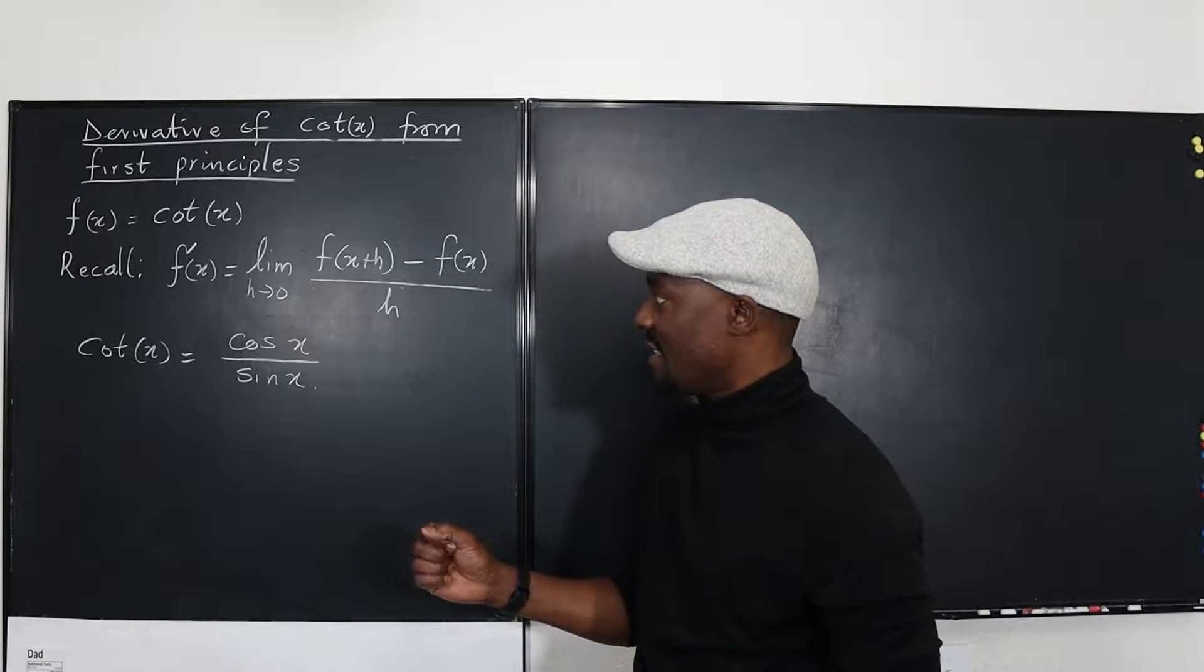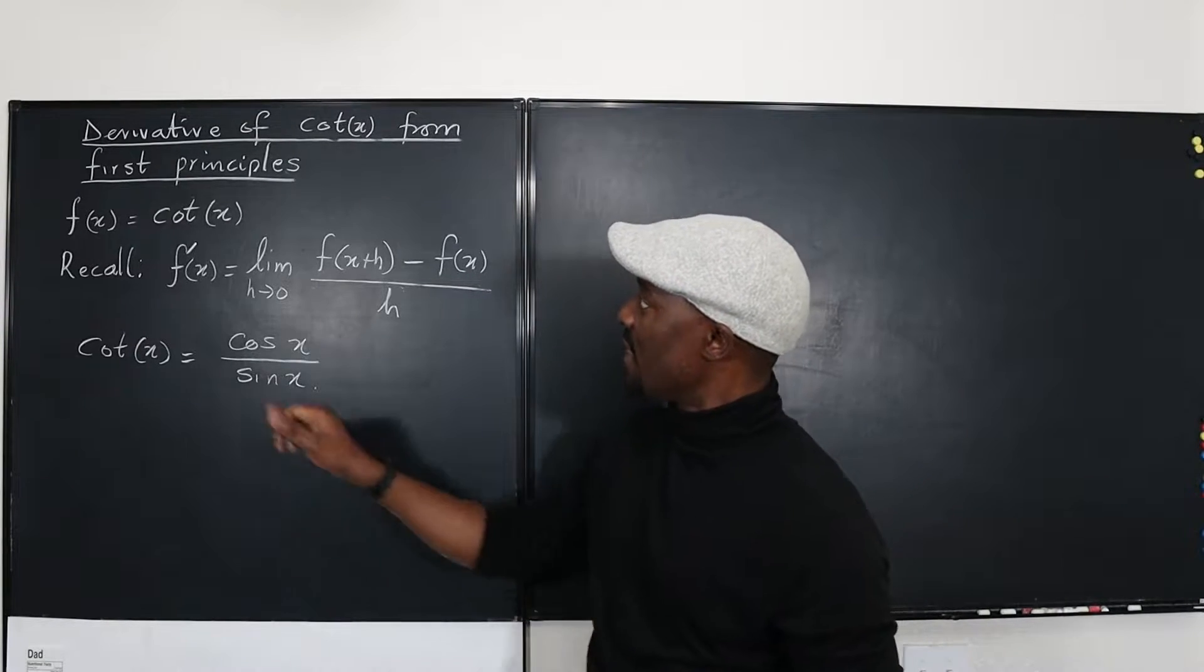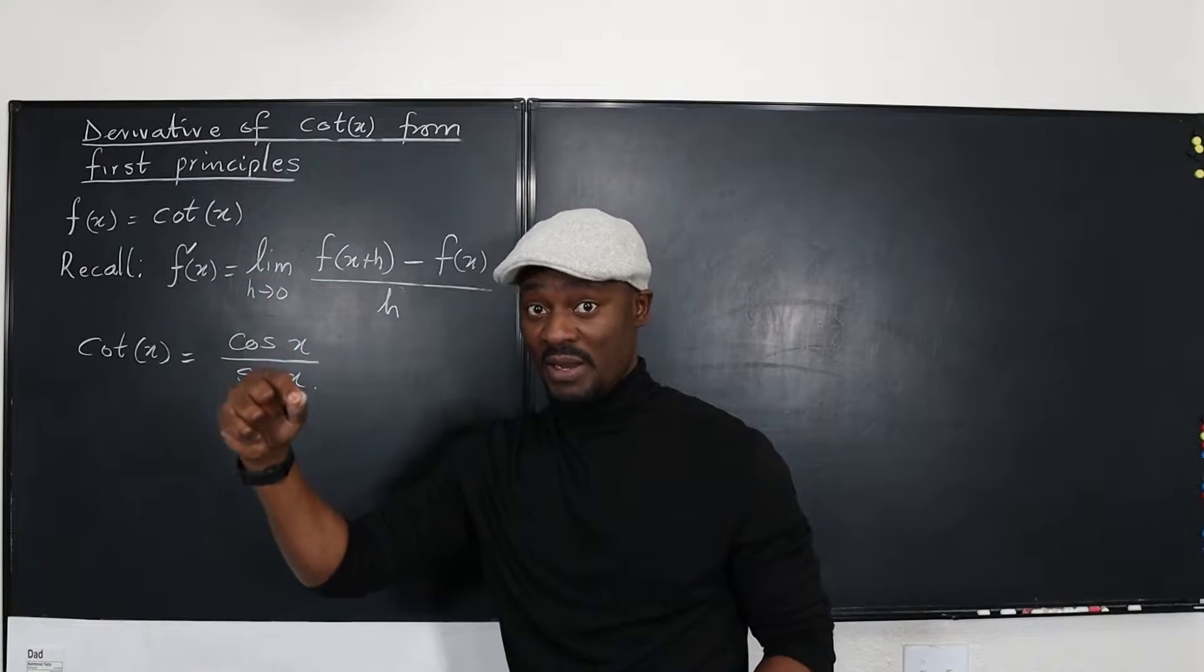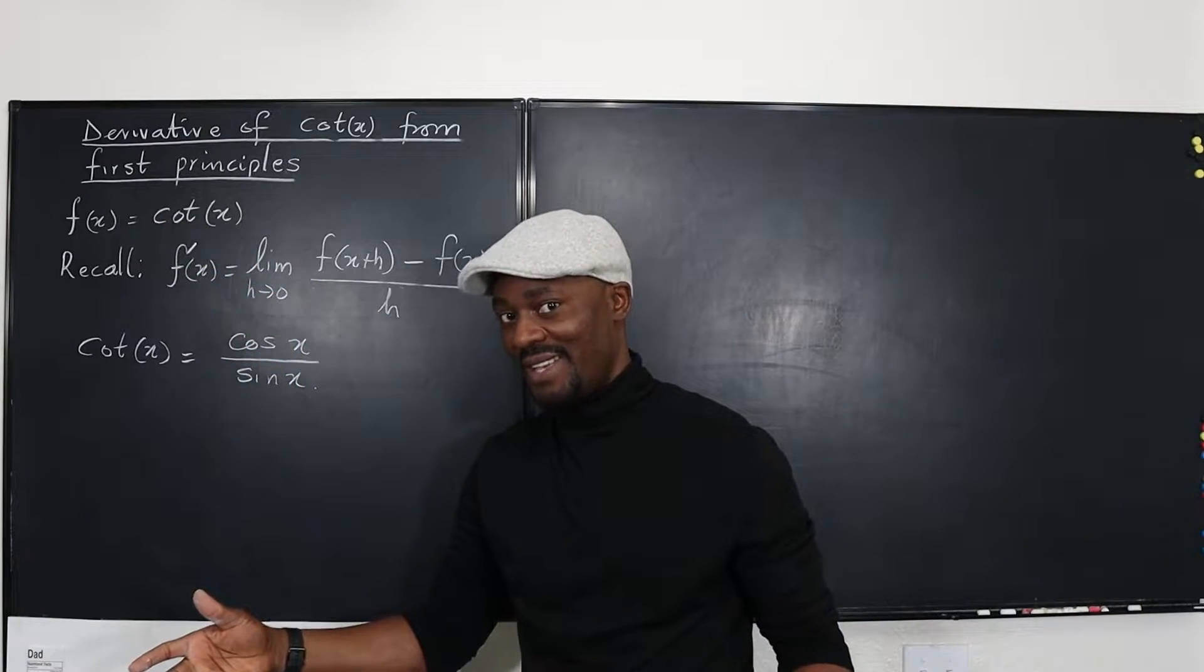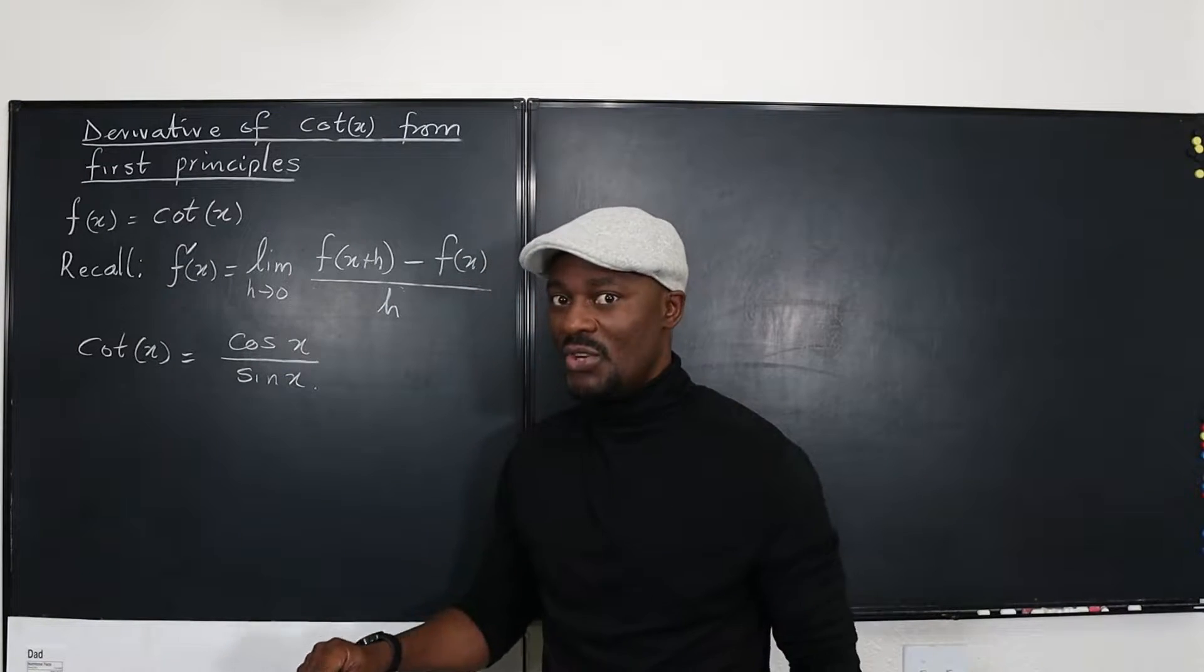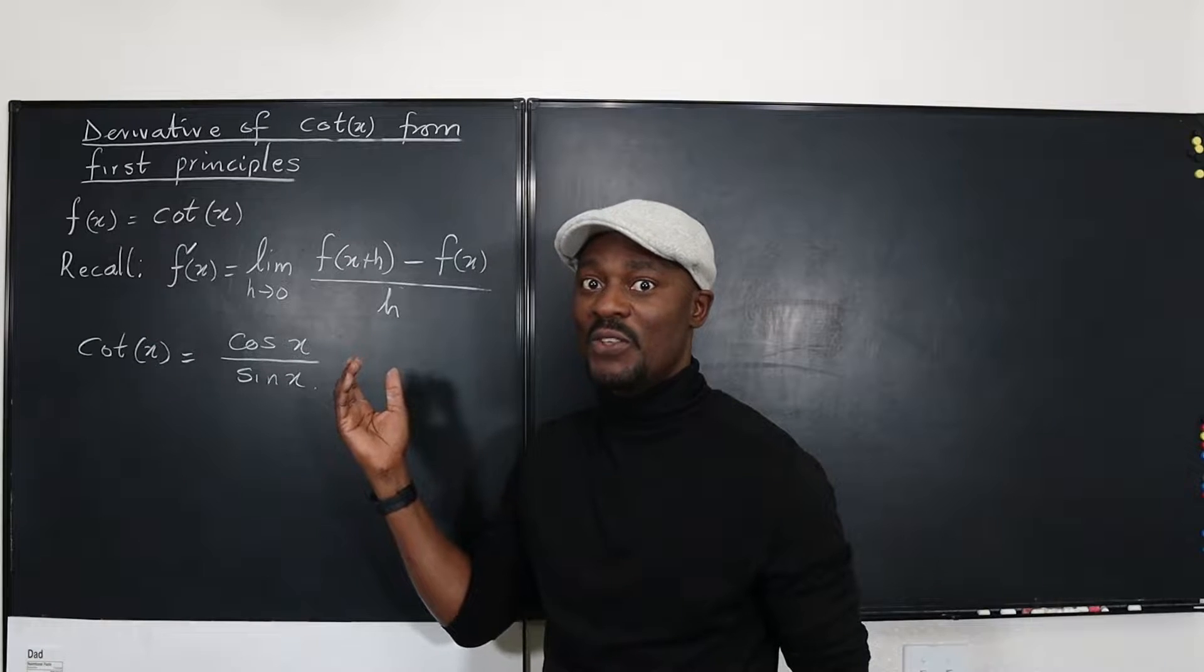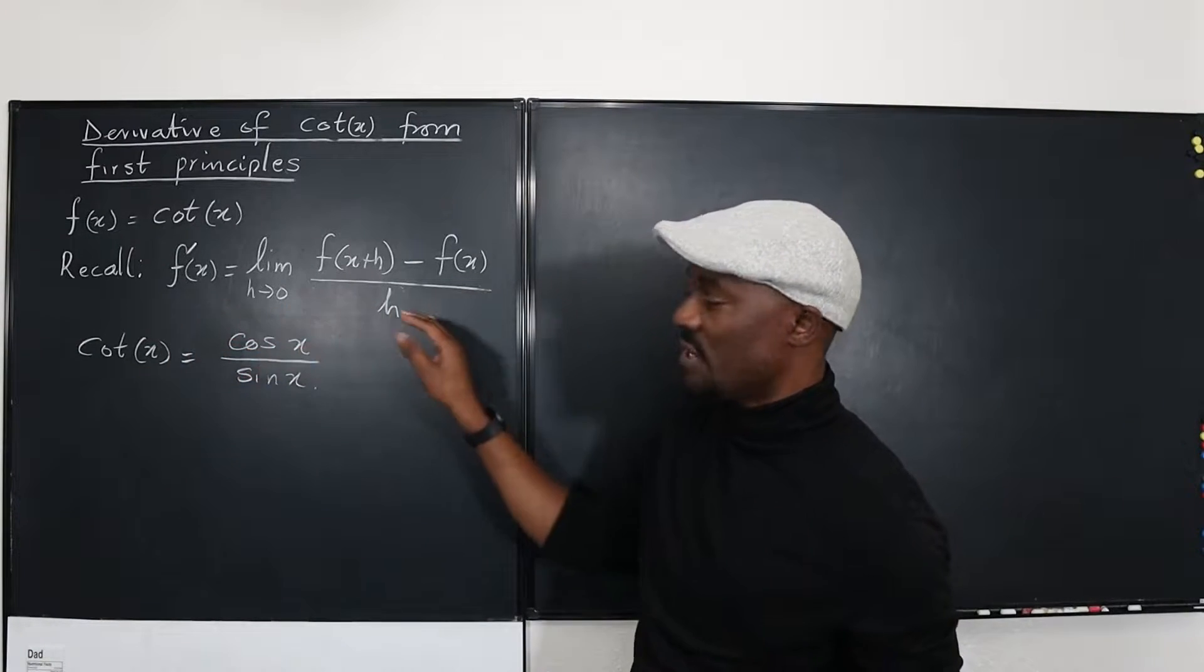What we're saying is that we want to find the derivative. We know the answer is supposed to be negative cosecant squared x, but you don't want to use the memorized version. You want to show that it's true using the definition of the derivative, which is this.